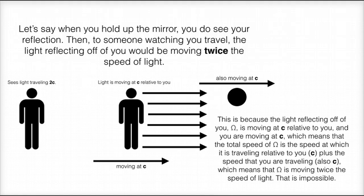Let's say when you hold up the mirror, you do see your reflection. Then to someone watching you travel, the light reflecting off of you would be moving twice the speed of light. This is because the light reflecting off of you is traveling at C relative to you, and you are moving at C.